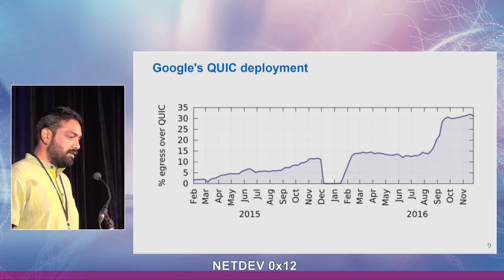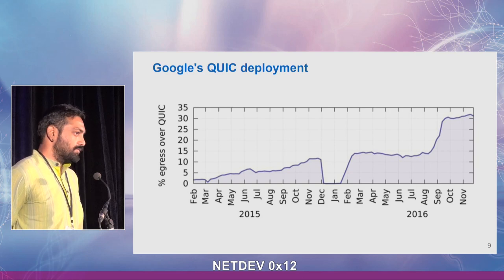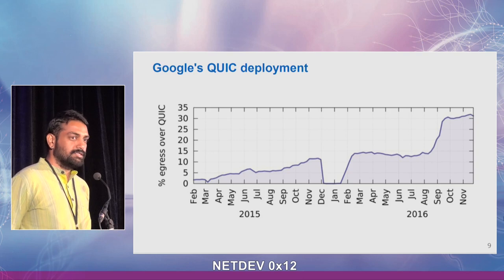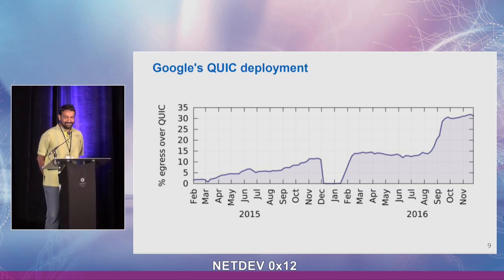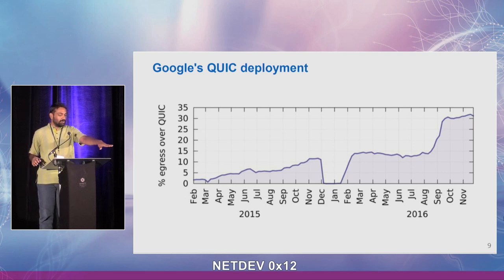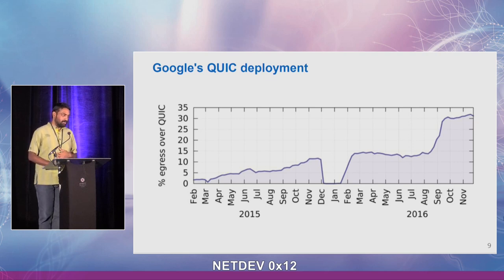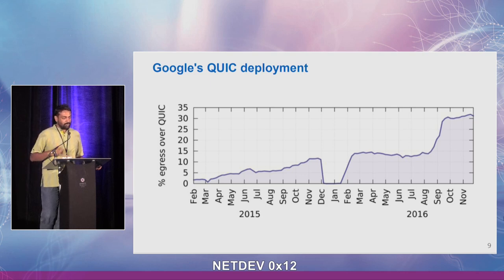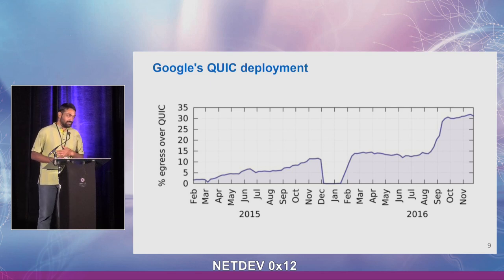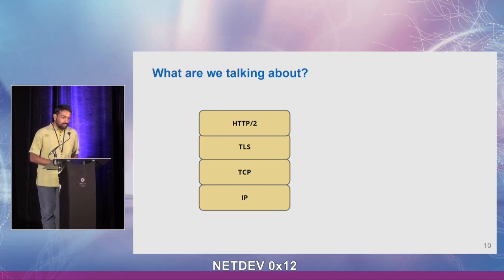Deployment was steady up until around August 2016, when we saw a huge increase in QUIC traffic. This was YouTube mobile app on Android — we launched it to full throttle on mobile, and that bump is because of mobile. If you're wondering where mobile is, it's a lot of our traffic. A lot of the Internet's traffic is, in fact, on mobile.